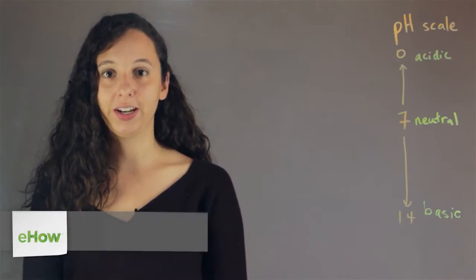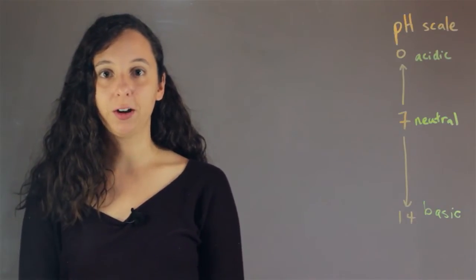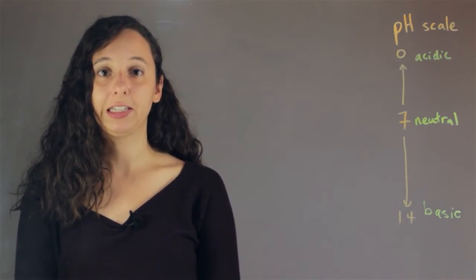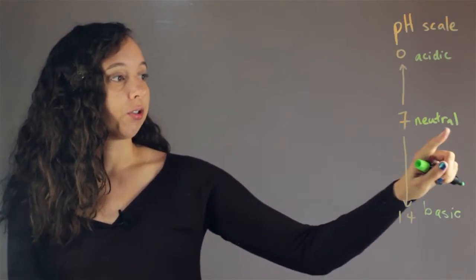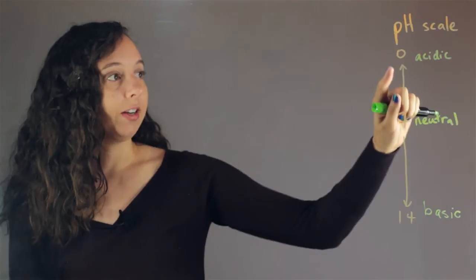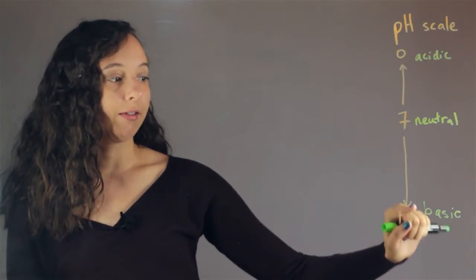Alright, so let's refresh on what pH is. pH is a scale that we use to determine if something is acidic or not. So, over here we have our scale, 7 is neutral, anywhere lower than 7 is acidic, anywhere higher than 7 is basic.